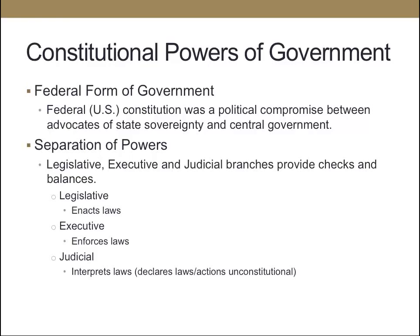Regarding the constitutional powers of government: the federal form of government was a political compromise between those who wanted state sovereignty and those who wanted a more centralized government. There are the legislative, executive, and judicial branches. In the legal arena, the legislative branch enacts the laws, the executive enforces the laws, and the judicial branch interprets the laws, or declares those laws or actions constitutional or unconstitutional.